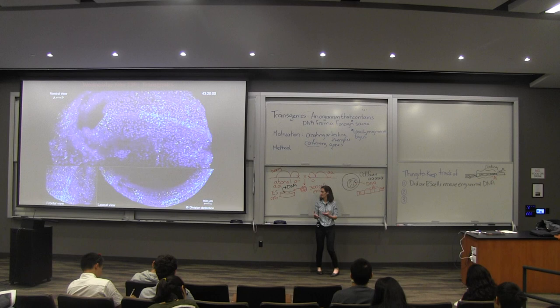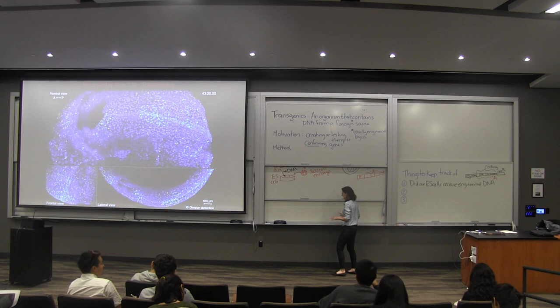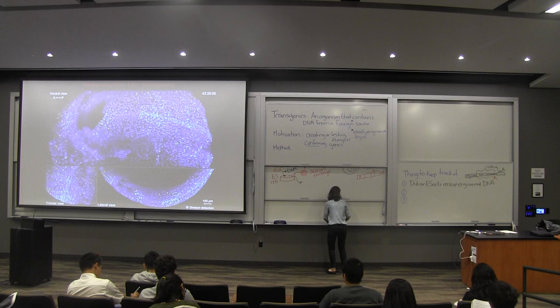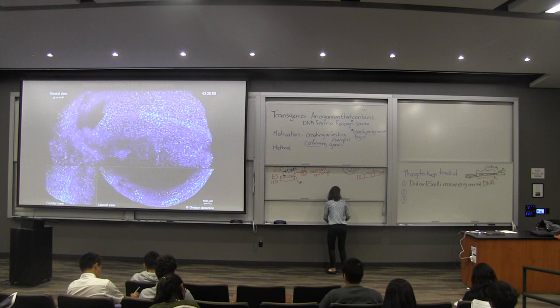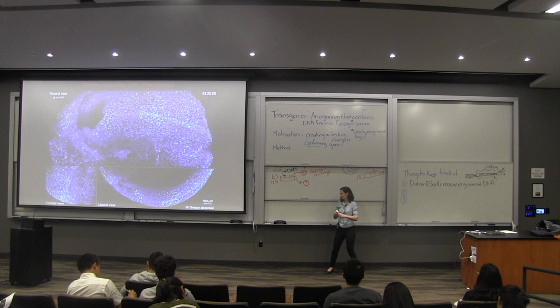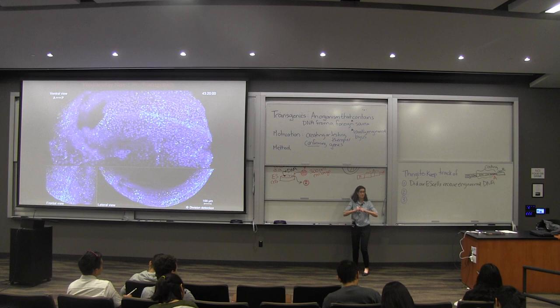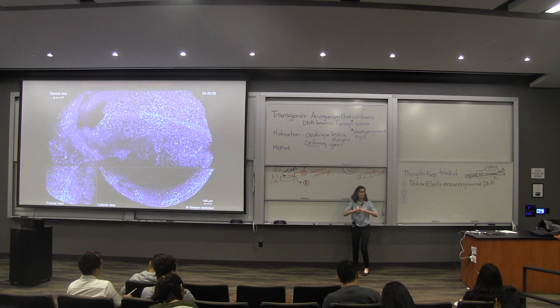We take these cells with our engineered DNA — which have that mutant genotype, but hopefully also the new allele — and figure out how to grow a mouse out of this. We get two other mice that look different, using mice with different coat colors, and we get them together. They'll produce a little embryo that's going to have a bunch of cells in it.